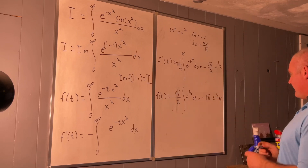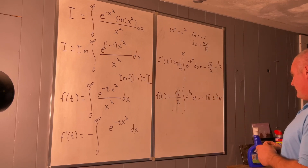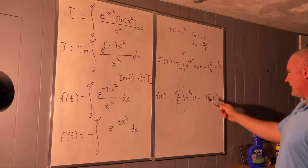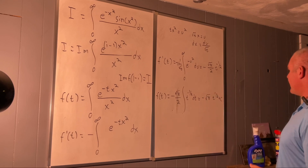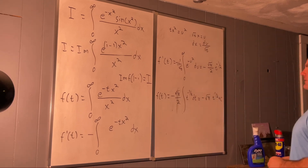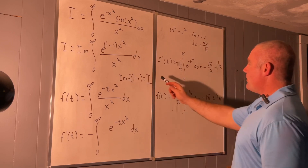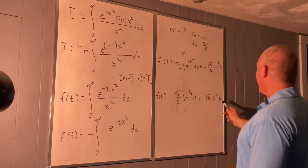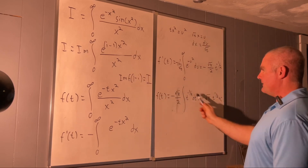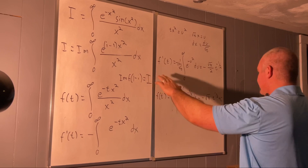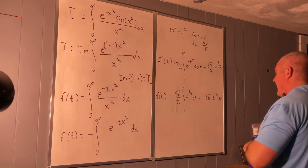Multiplying by two gets rid of that denominator and we still have negative square root of pi times t to the one half. Now let's evaluate our function at the point (1 minus i).